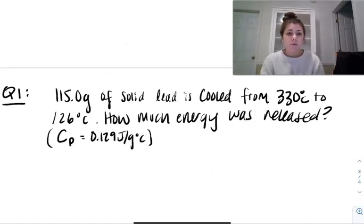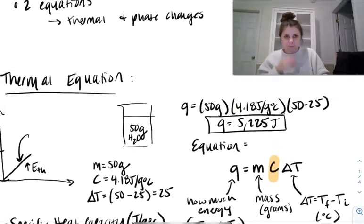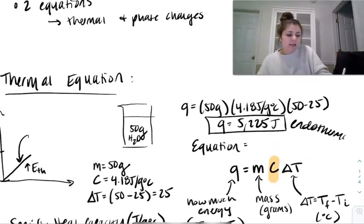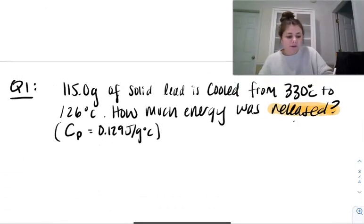All right. So I have a problem for you. If you want to actually pause the video and try this out yourself, you're more than welcome to. So we have 115 grams of solid lead, and it is cooled from 330 degrees Celsius to 126 degrees Celsius. How much energy was released? So first thing first, I hope something popped in your head and you're like, released. That must mean that we're looking at something that's negative. The problems that we did prior, those values ended up being positive. Like this was endothermic. This was endothermic. Things were being heated. The values for Q were positive. So here, we should be expecting a negative value.